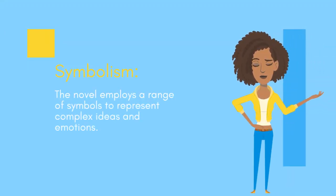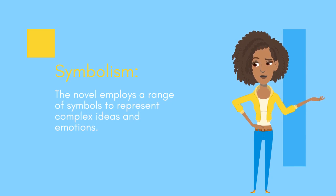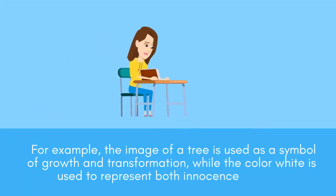The novel employs a range of symbols to represent complex ideas and emotions. For example, the image of a tree is used as a symbol of growth and transformation, while the color white is used to represent both innocence and privilege.